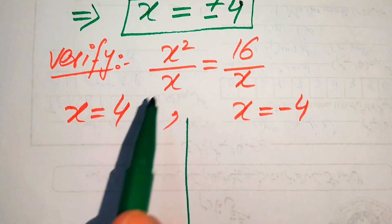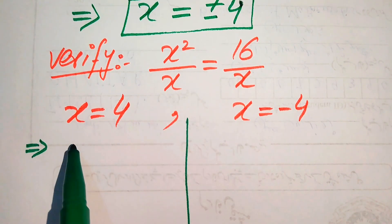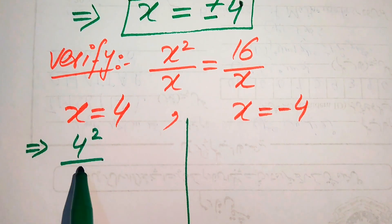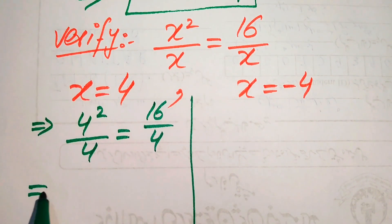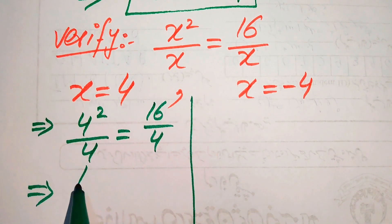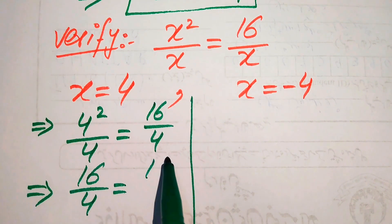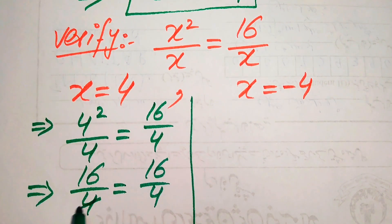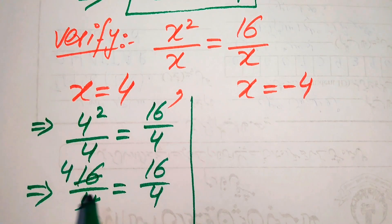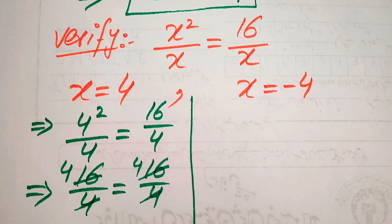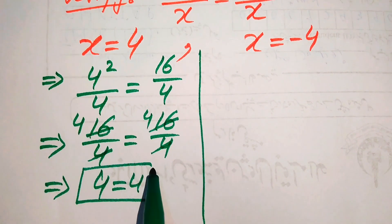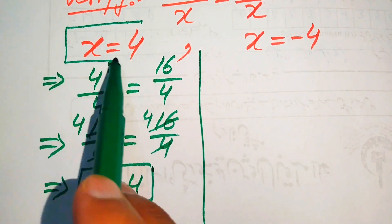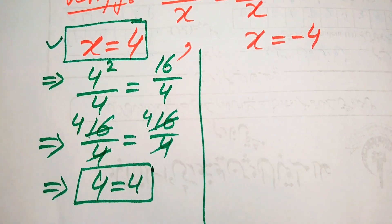First we put x equals 4 into both sides of the given equation. It becomes 4 squared divided by 4 equals 16 divided by 4. Here 4 squared becomes 16 over 4, and 16 over 4 on the right side — these cancel out and we get 4 equals 4. This shows that x equals 4 satisfies our given equation and is the first solution.